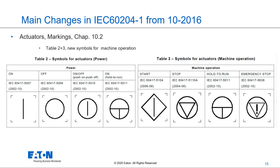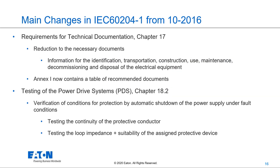In Chapter 10.2, actuators and markings, there was a revision of a table with new symbols for machine operation. There is now a clear differentiation between switching on/off the power and switching on/off the operation of the machine. A major revision was also made in Chapter 17, technical documentation, with a reduction to only the necessary documents. Documentation should include information for identification, transportation, construction, use, maintenance, decommissioning, and disposal of the electrical equipment. A new Annex E has been added to help find the right documents.